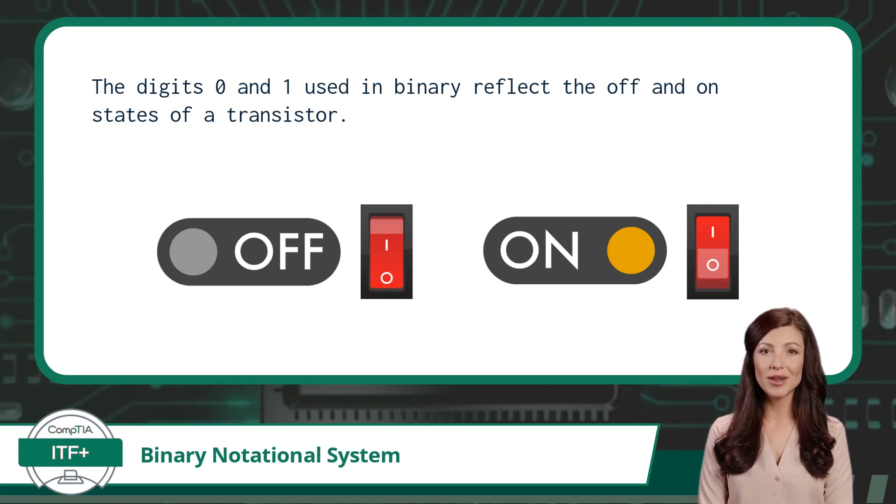These transistors can be in either an off or on state. The digits 0 and 1 used in binary reflect the off and on states of a transistor, where 0 is off and 1 is on.